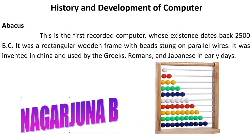History and Development of Computer. Abacus: This was the first recorded computer, whose existence dates back to 2500 BC. It was a rectangular wooden frame with beads strung on parallel wires, as visible in the image. It was invented in China and used by Greeks, Romans, and Japanese in the earlier days.